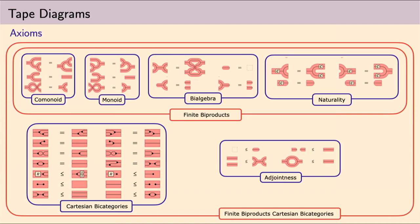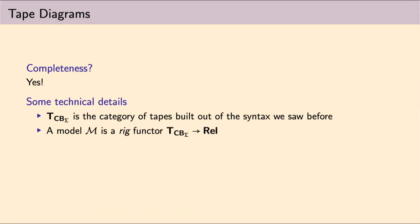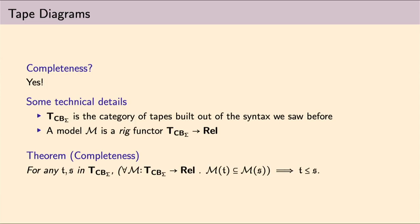But the main result of our work is that these axioms are actually complete for the coherent fragment. Let me spell this in a little bit more details. If we call TCB the category of tapes with all of the syntax we just presented, and if we consider a model as a functor between TCB and Rel preserving the rig structure, then the completeness theorem basically says that I can take any two tapes in TCB, and they are equal by the set of axioms, the finite biproducts of Cartesian bicategories axioms, whenever their images along the functor M for any possible M are also equal.